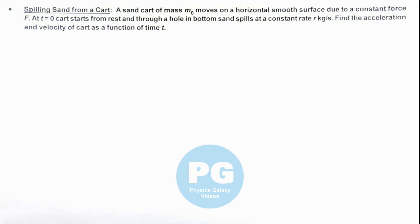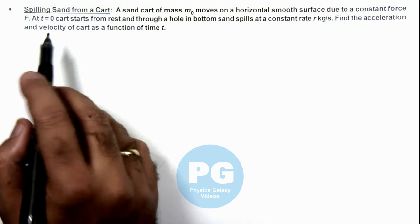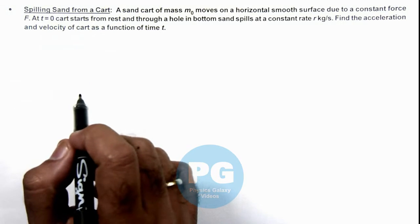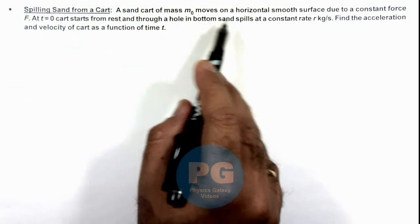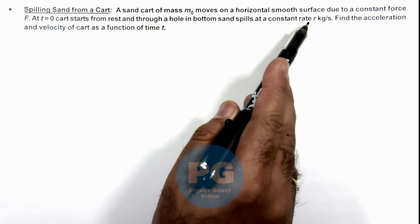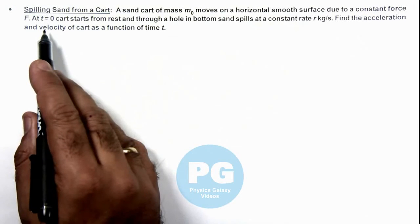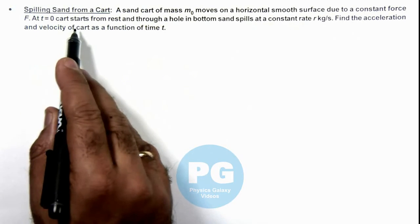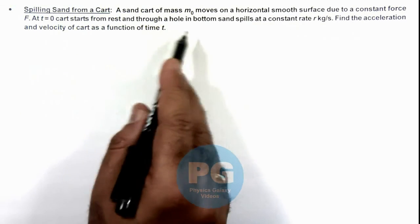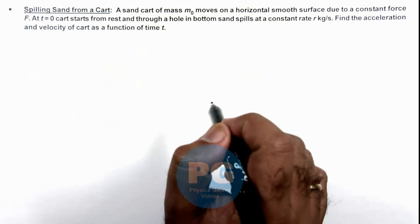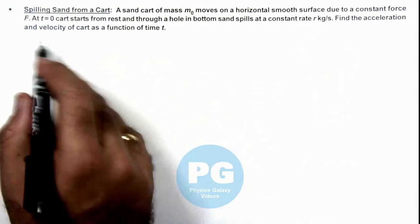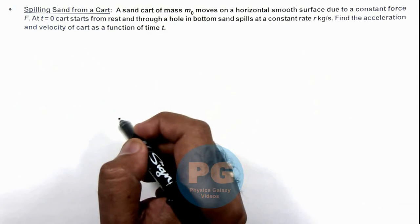In this illustration we'll analyze a case when sand spills from a cart. Here, we are given that a sand cart of mass m₀ moves on a horizontal smooth surface due to a constant force F. At t = 0, the cart starts from rest and through a hole in bottom, sand spills at a constant rate r kilograms per second. We are required to find the acceleration and velocity of cart as a function of time.